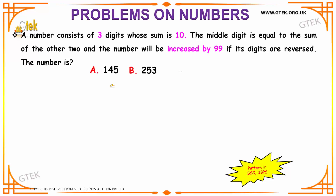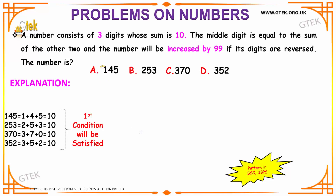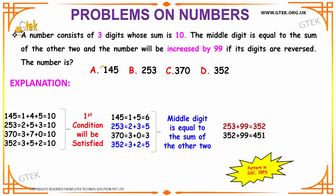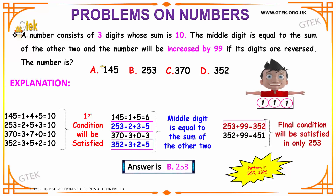Moving on to our next interesting example. A number consists of three digits whose sum is 10, and the middle digit is equal to the sum of the other two. If the number is increased by 99, then its digits are reversed. What will be the number?